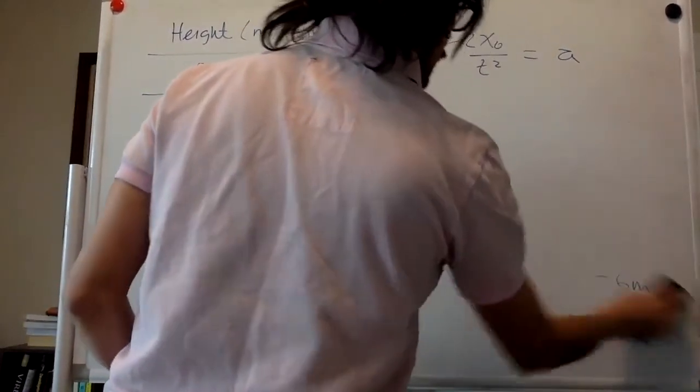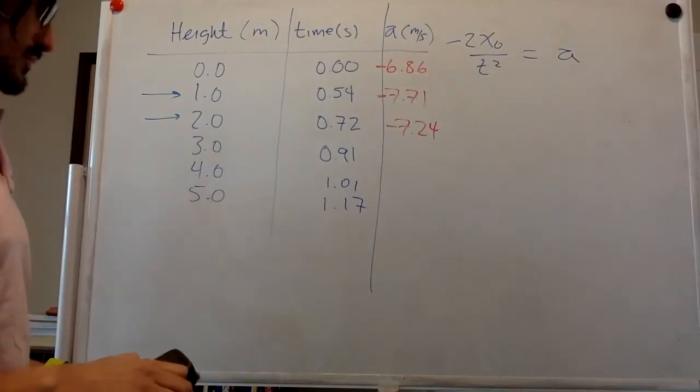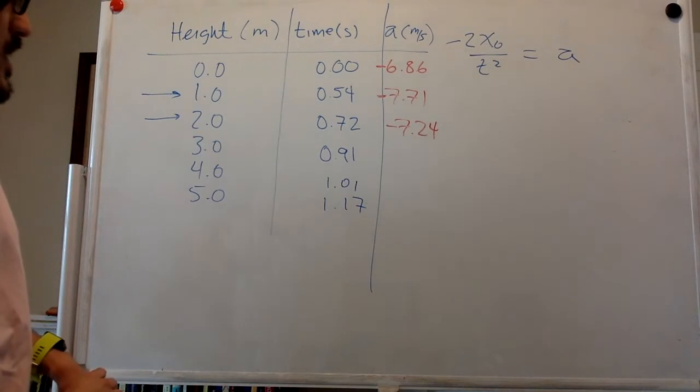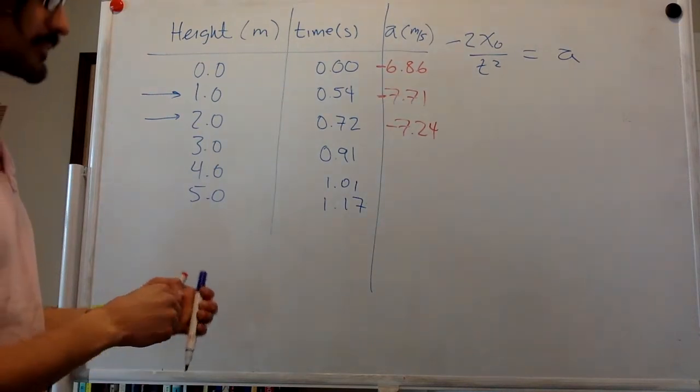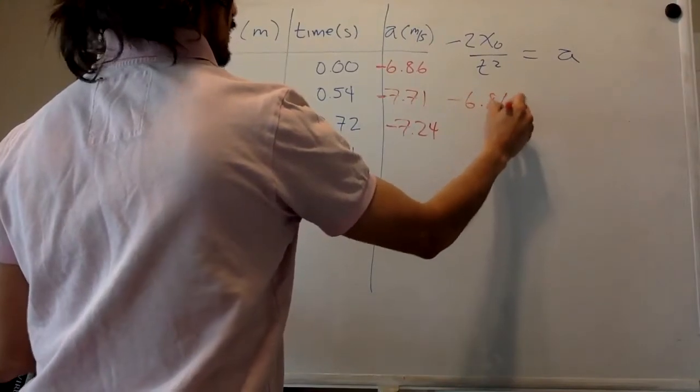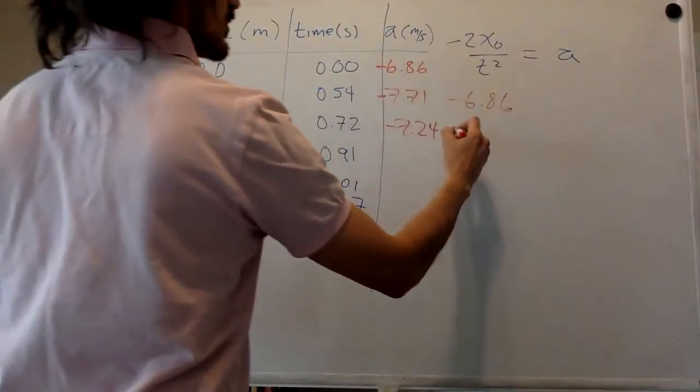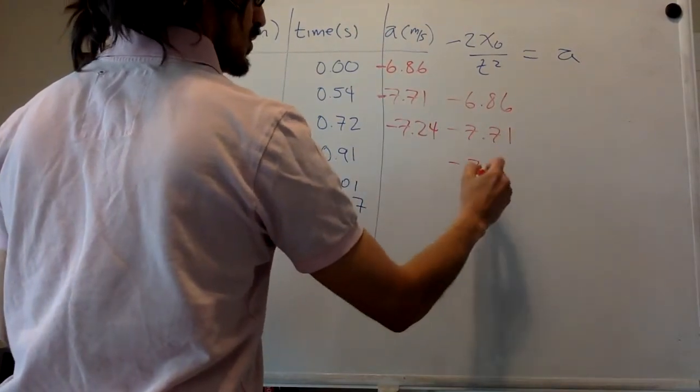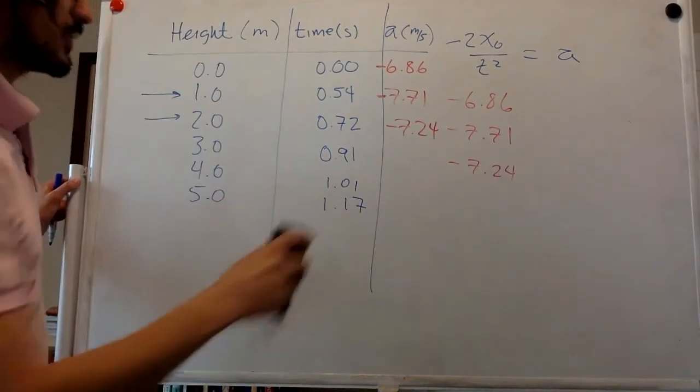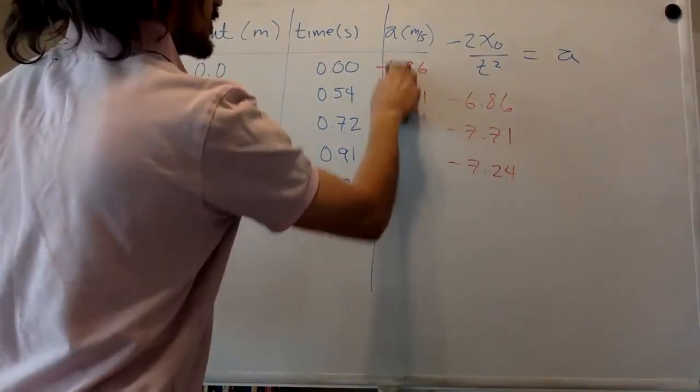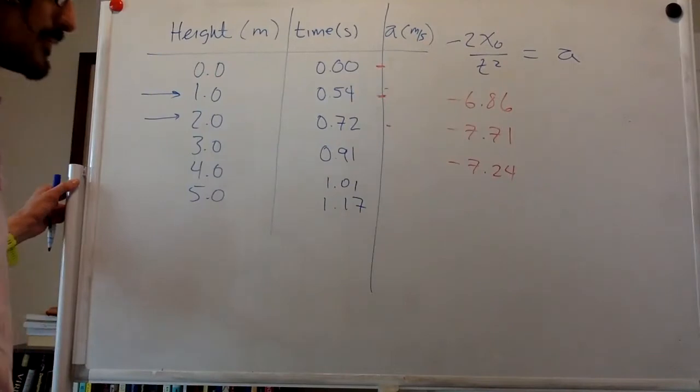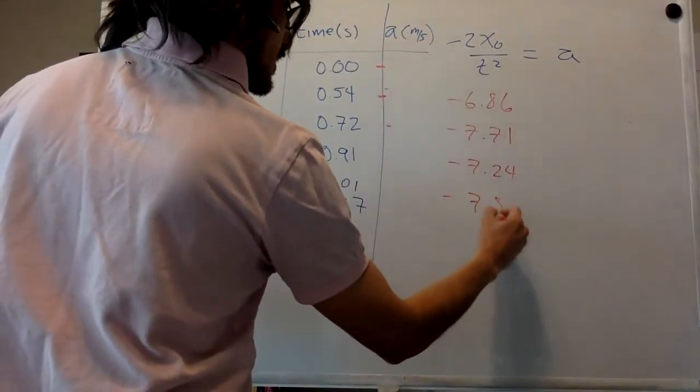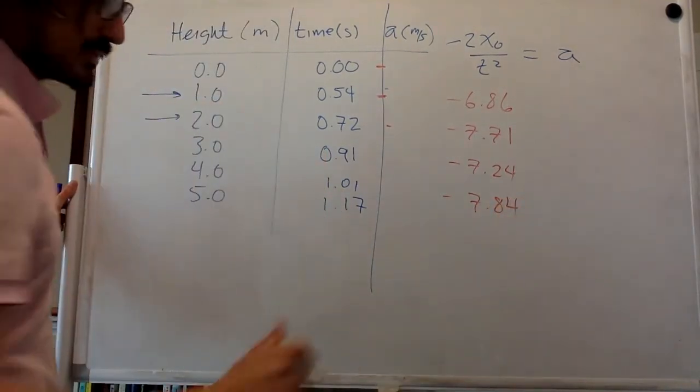And we'll just do exactly the same for the other. I guess this one was 6.86, right? This is the first one. This one was 7.71. 7.24. Sorry about that. I started at zero, which is not defined. 7.84. And 7.30.